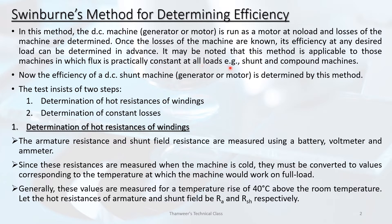So, examples of such machines include shunt and compound machines. In this method, the machine is run as a motor at no load condition, and we determine the losses under those conditions.